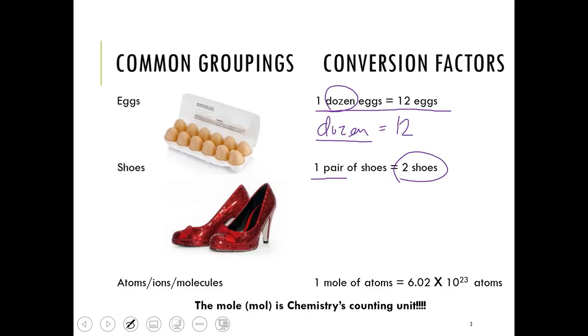So this is similar in chemistry terms. We can say that we have a mole of something. And a mole of something implies that we have this really large number, 6.02 times 10 to the 23rd of that substance.